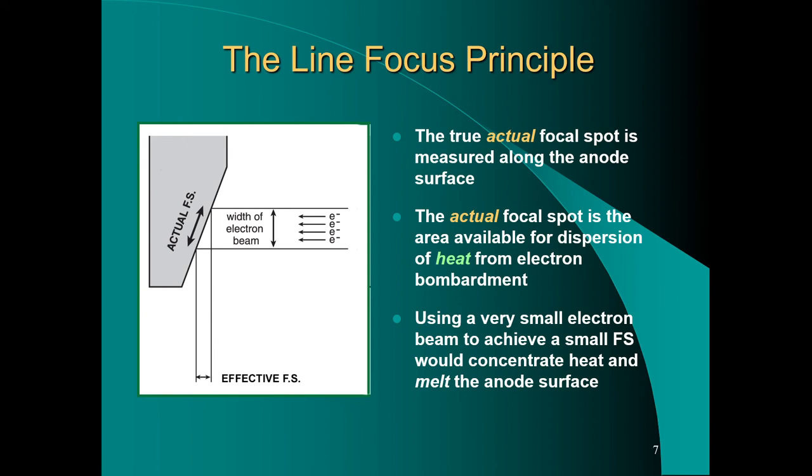Out of a hundred percent of the energy that goes into shooting that electron stream across, roughly 99% of that energy or more is turned into heat. Less than one percent we actually get usable x-rays from.